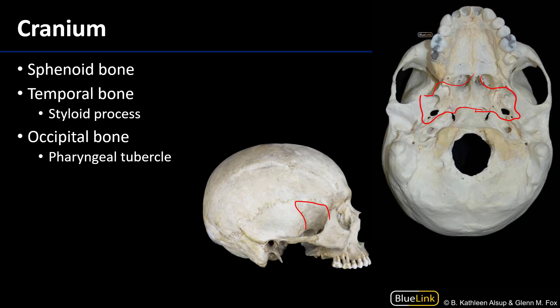In the context of this lab, the medial plate of the sphenoid bone and the pterygoid hamulus — that's the plate, and at the end of the plate is the hamulus — is the superior structure to which the pterygomandibular raphe attaches, which is the bulk of the attachment site for the superior pharyngeal constrictor muscle. That pterygomandibular raphe is going to run between that medial plate of the sphenoid and the mylohyoid line of the mandible, which we'll see shortly.